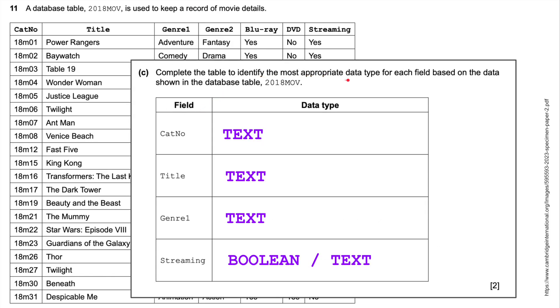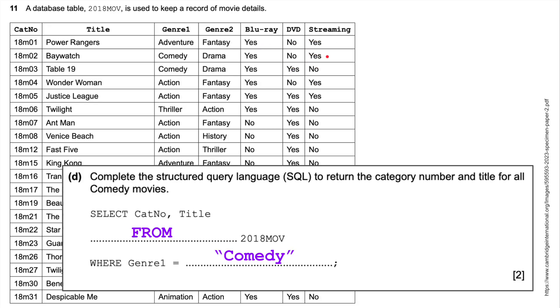Complete the table to identify the most appropriate data type for each field based on the data shown in the database table. So cat number, well, because it's a mixture of numbers and letters, it would have to be a text file. Same with the title, a text file. Same with the genre. There's different, all different genres. Fantasy, drama, comedy, adventure. So again, it would be a text file. But the streaming is either yes or no. You could use it as a text file. But generally speaking, it would be Boolean. You would pick up marks, two marks there, if you put text in each one of these. But generally speaking, the Blu-ray, the DVD, and the streaming are all going to be Boolean data types.